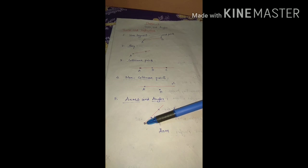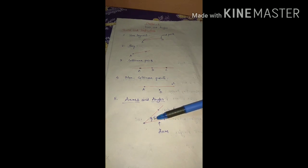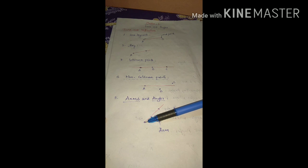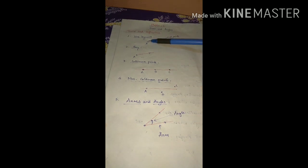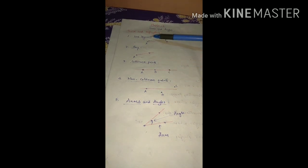The fifth one is arms and angles. From a fixed point, if two rays are formed, an angle is created in between the two rays. Those two rays are known as arms, and the space in between them is known as the angle. So from a fixed point, two rays are formed, and in between those two rays one angle is formed — that is the angle, and the other two are the arms.